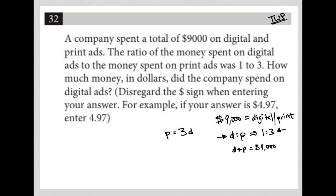However much money you spent on print is equal to three times the amount of money spent on digital. Which means I could replace P with 3D, right? That would give me a one to three ratio.